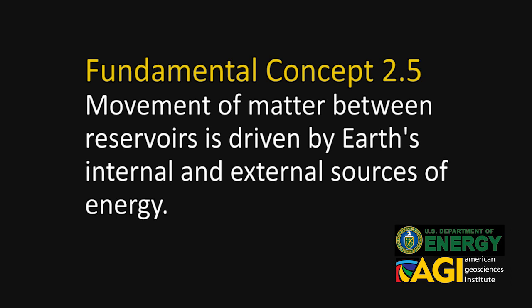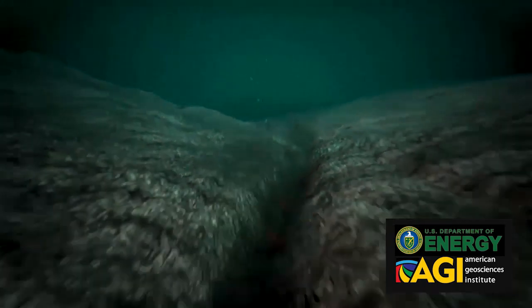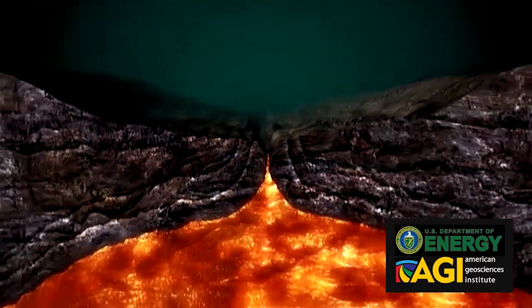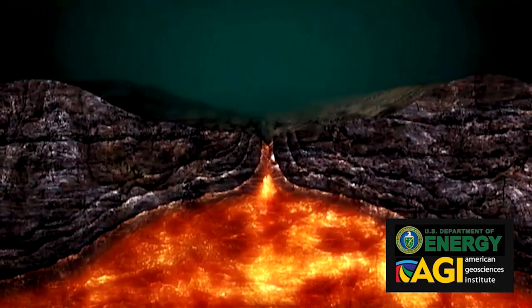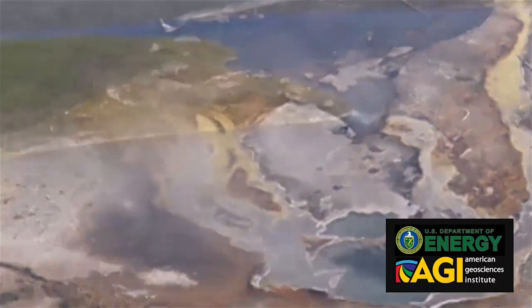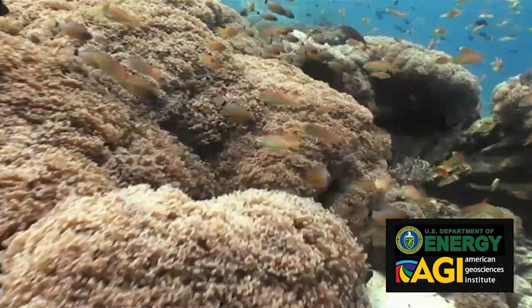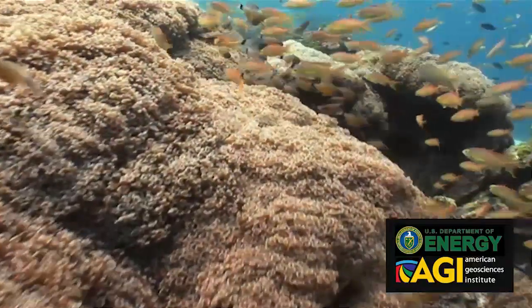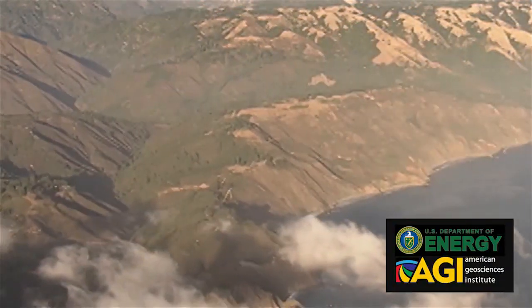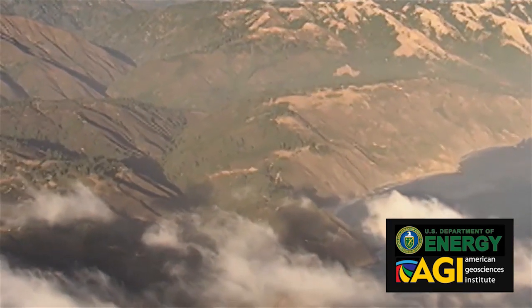Movement of matter between reservoirs is driven by Earth's internal and external sources of energy. These movements are often accompanied by a change in the physical and chemical properties of matter. Carbon, for example, occurs in carbonate rocks such as limestone, in the atmosphere as carbon dioxide gas, in water as dissolved carbon dioxide, and in all organisms as complex molecules that control the chemistry of life. Energy drives the flow of carbon between these different reservoirs.